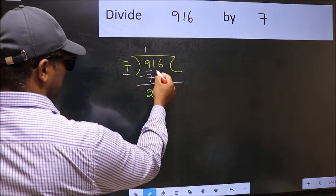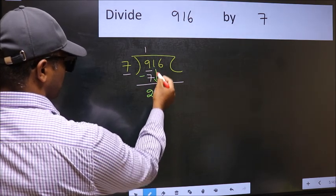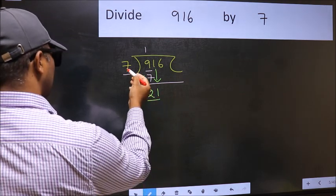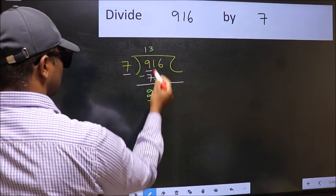After this, bring down the beside number. So, 1 down. Now, 21. When do we get 21 in the 7 table? 7 times 3 equals 21.